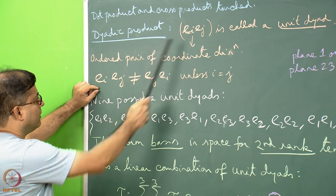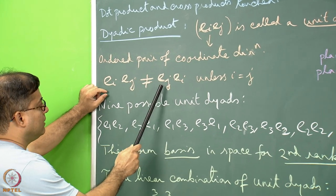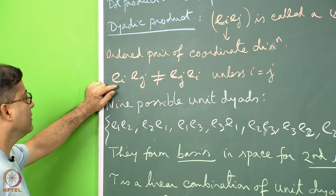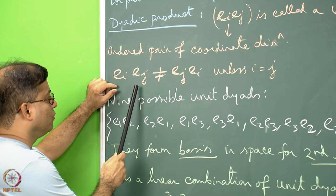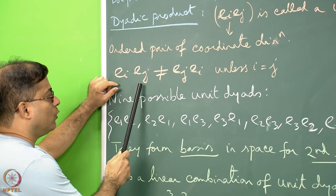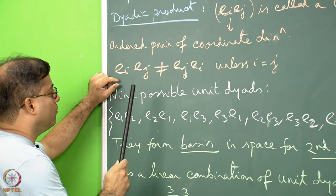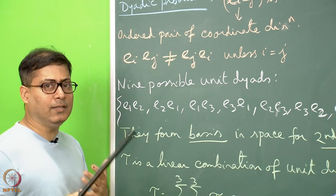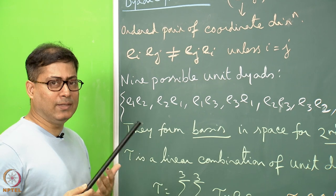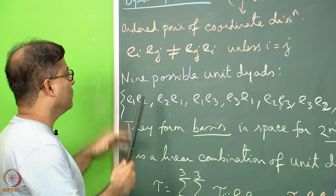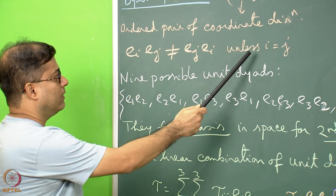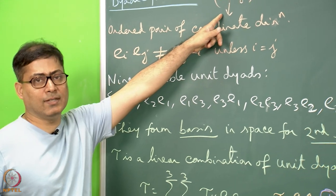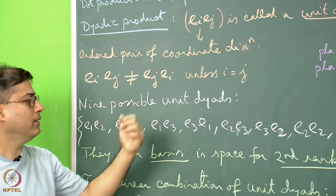EI, EJ is not equal to EJ, EI unless I equals J. That means E1, E2 will not be equal to E2, E1. But E1, E1 is naturally the same as itself. These are human-made definitions — this is the way we are defining things.